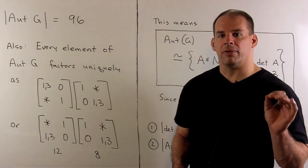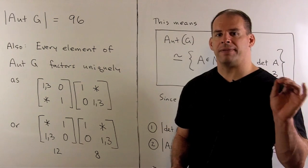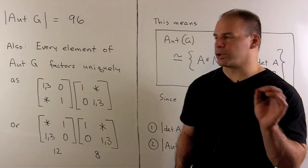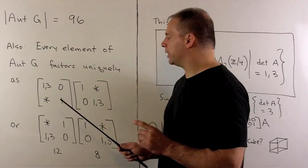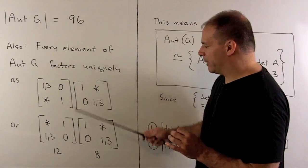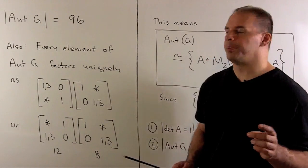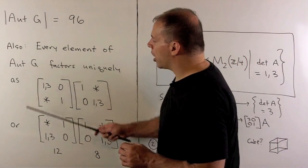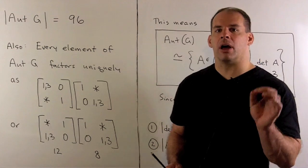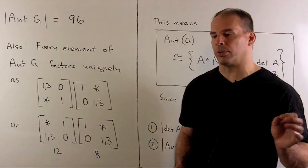Not only do we get the number of automorphisms from the previous board, we also have a result on factoring our matrices. So, we could factor any matrix coming from aut G into one of these forms. Now, these matrices here are going to be the stabilizers of 1,0. Our matrices here are going to be those that send E1 to another element of order 4, and that have determinant equal to 1 or 3.